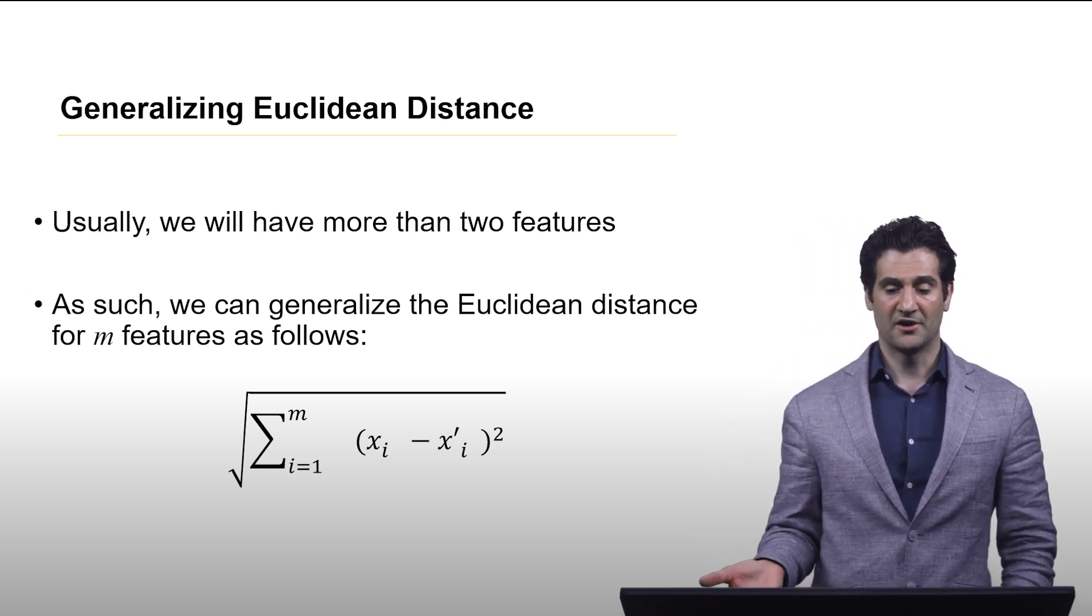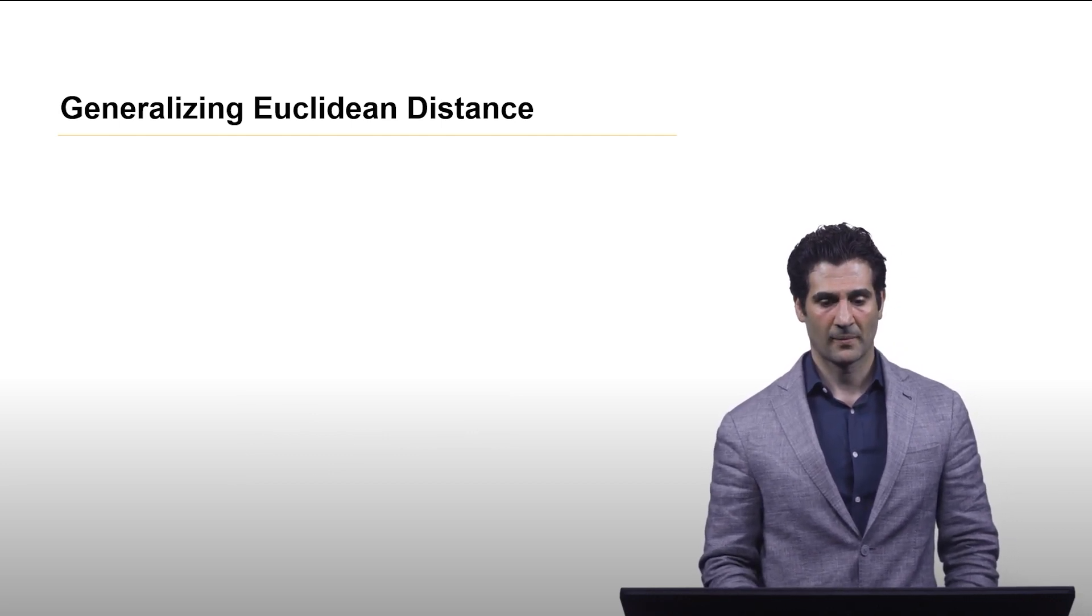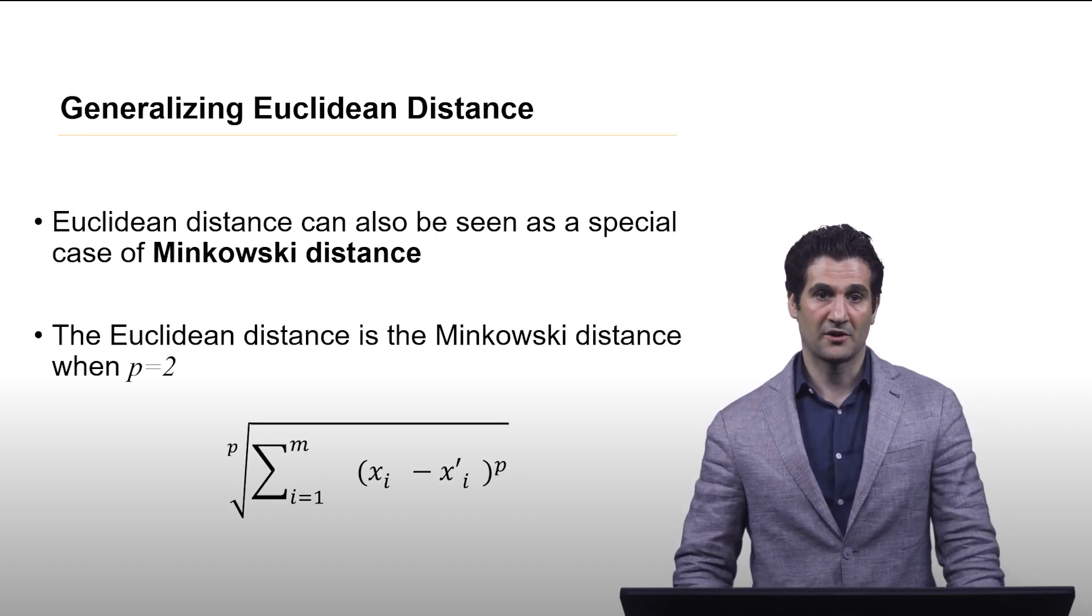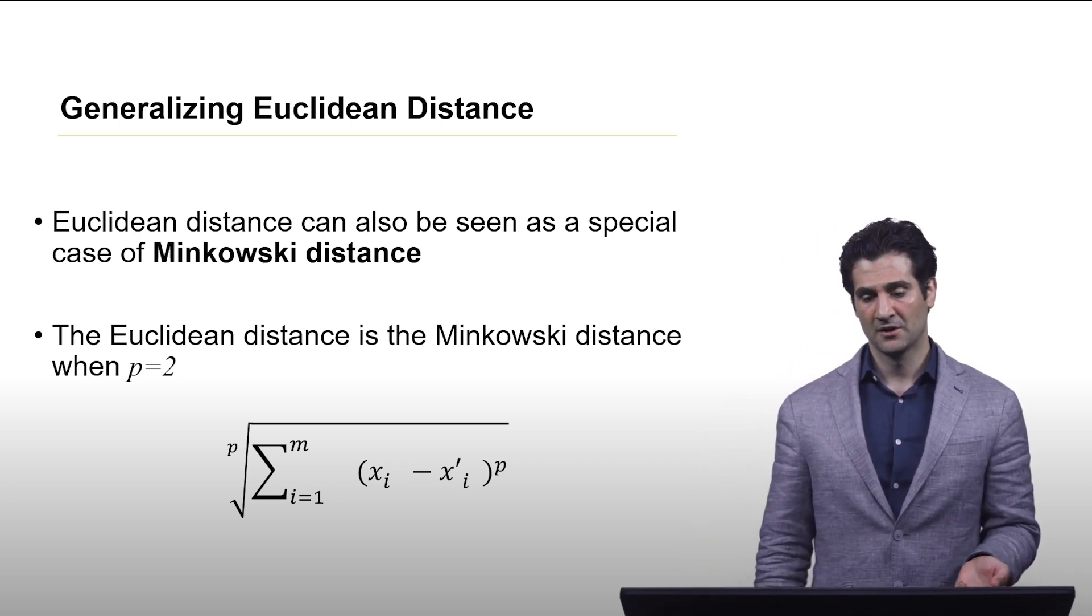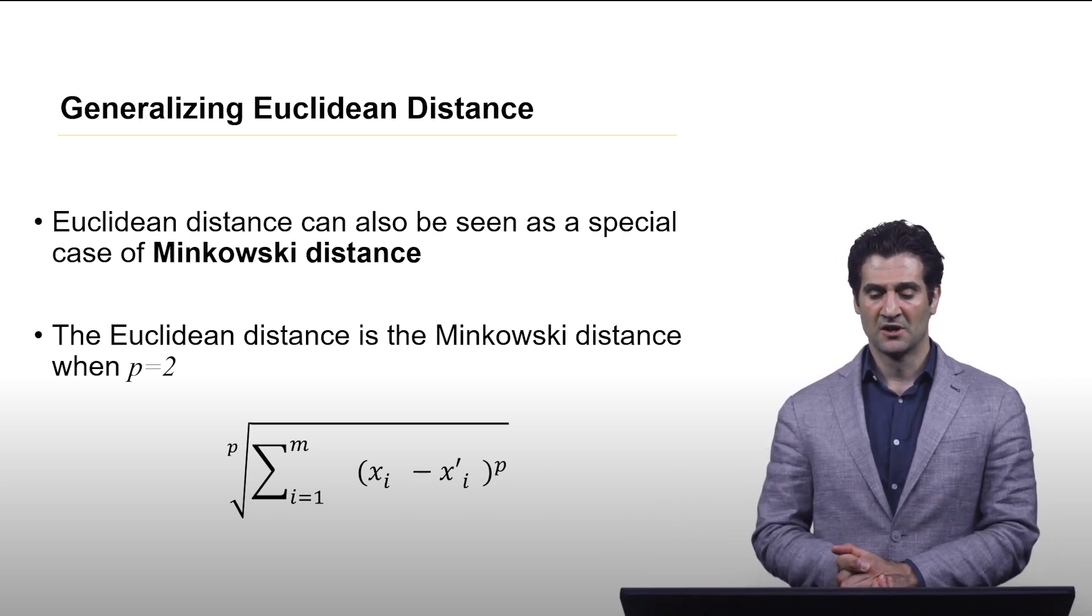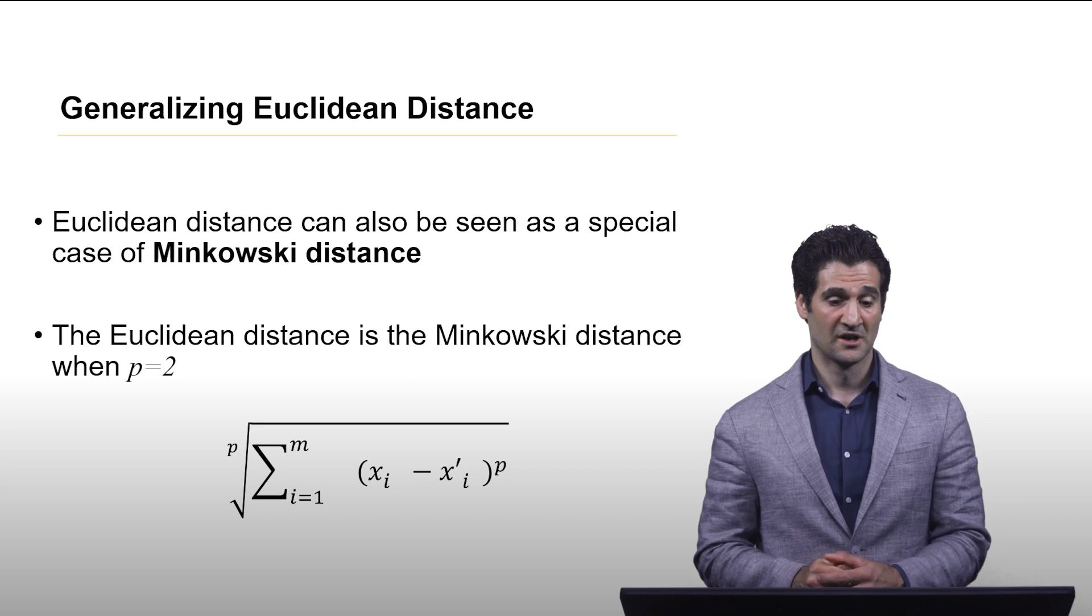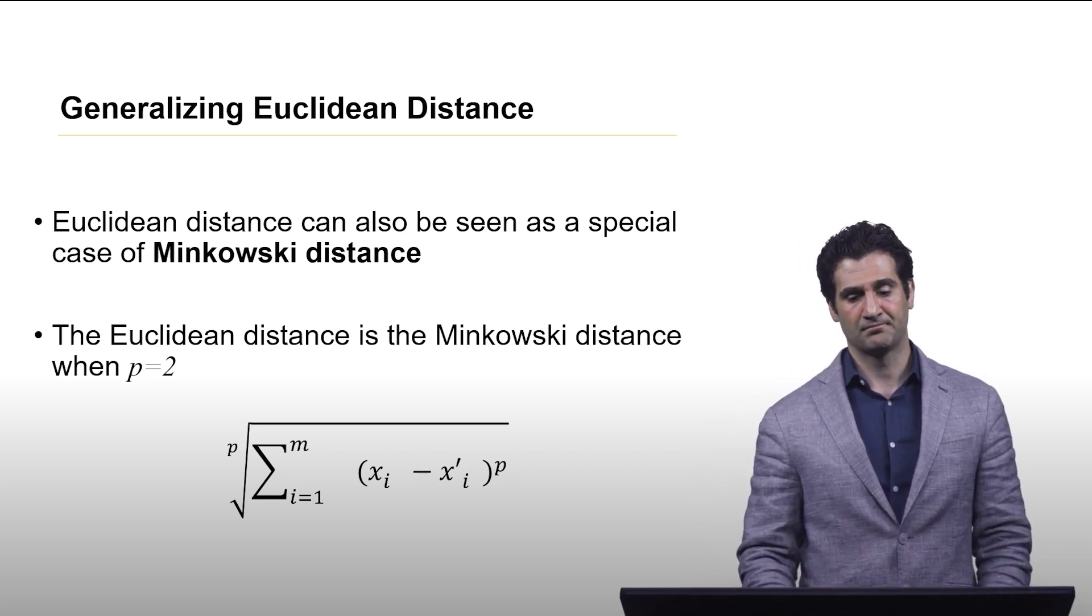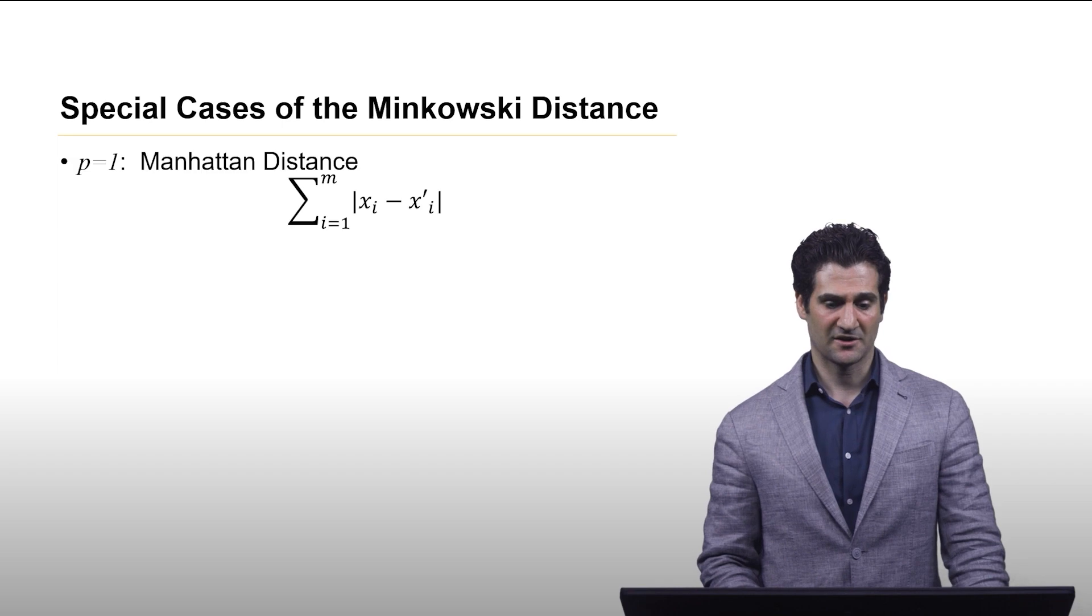This can be generalized further in something called the Minkowski distance. Here we have a parameter p which set to 2 gives you the Euclidean distance. P is both the exponent applied to each difference between points as well as specifies the root that you're taking of the overall sum. There's some very common cases of the Minkowski distance.